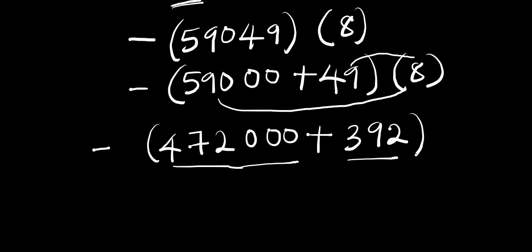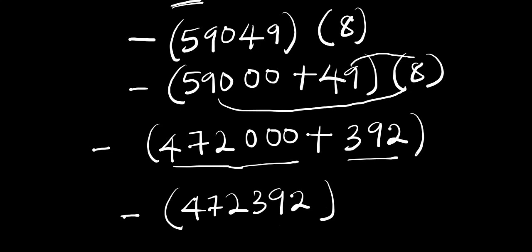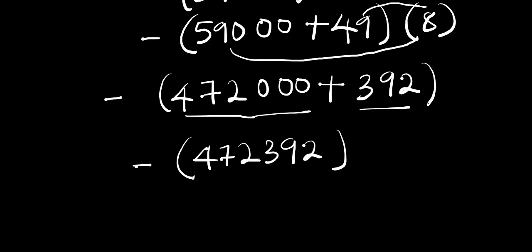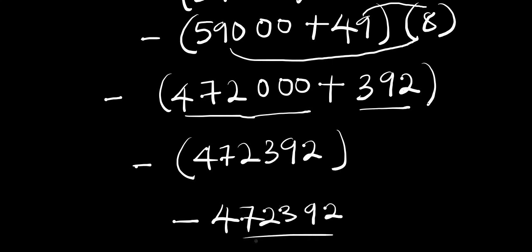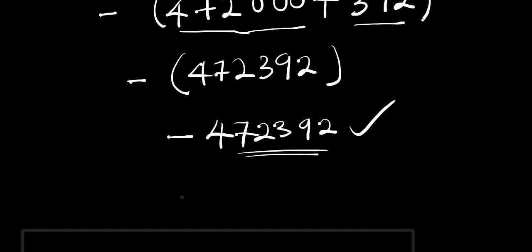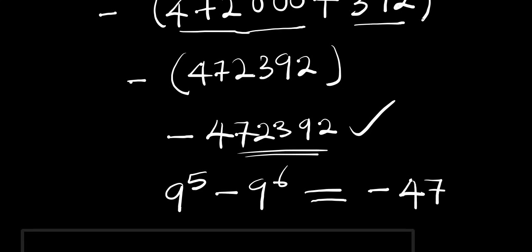So we get negative 472,392. Multiplying by the negative gives us negative 472,392. This is the final answer for 9 to the power of 5 minus 9 to the power of 6, which equals negative 472,392.